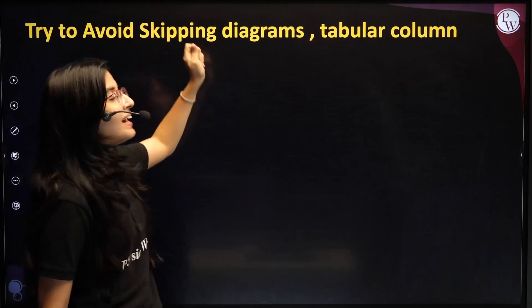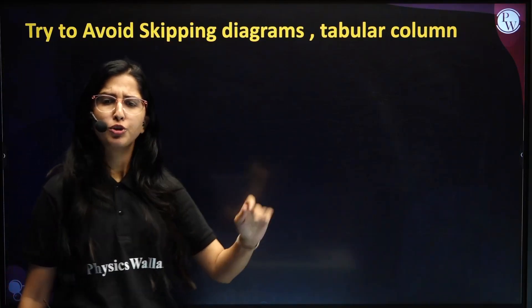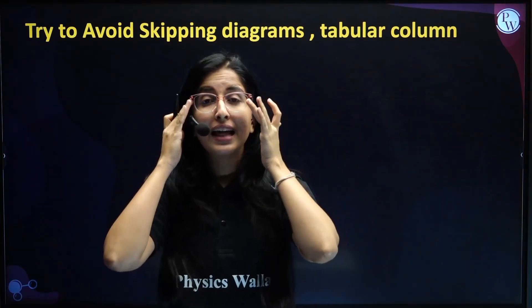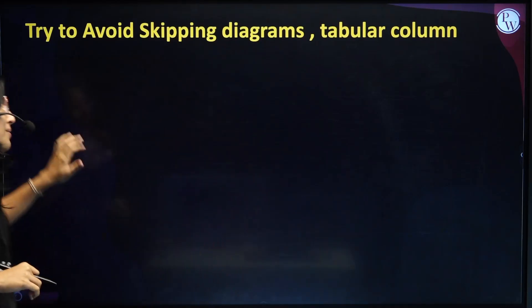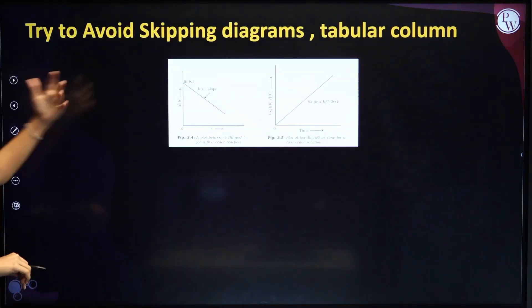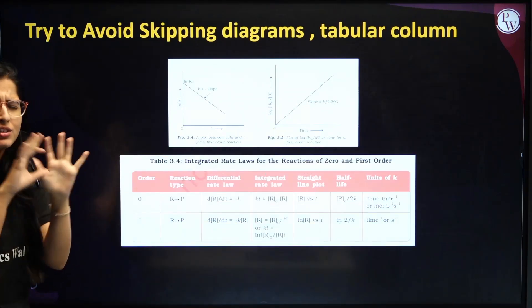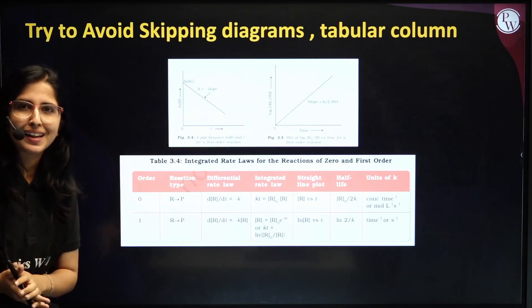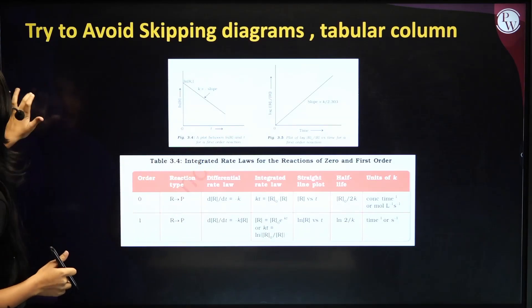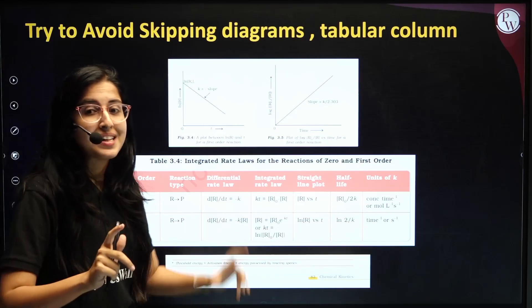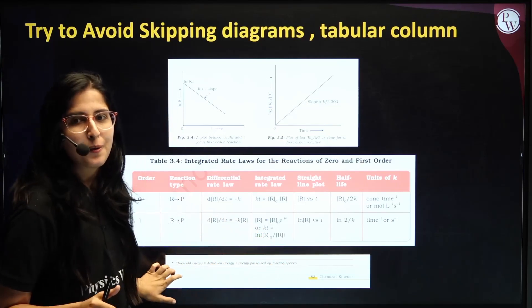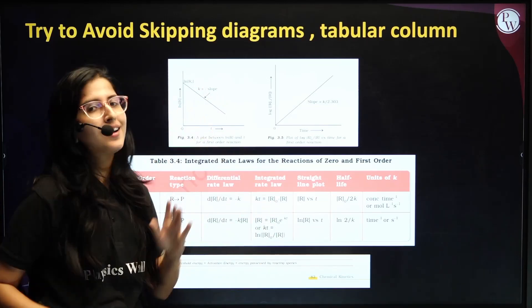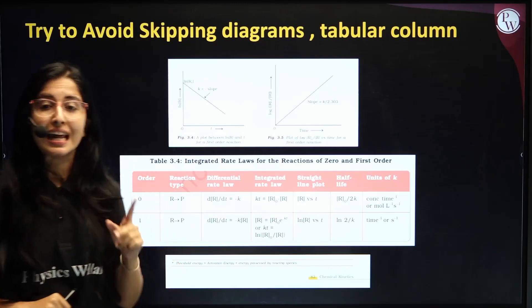Try to avoid skipping diagrams, graphs, and tabular columns. Many students skip diagrams, skip graphs, and skip tabular columns, thinking they are not important. But they will be very helpful. The graphs and tabular columns are ready-made summaries given to you in the textbook for quick understanding. Sometimes, extra information is also provided in the textbook that 99% of students ignore — you should never do that.